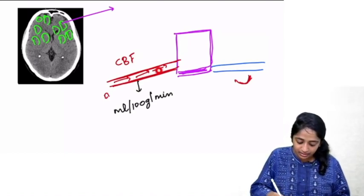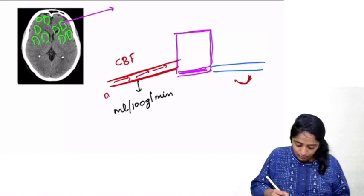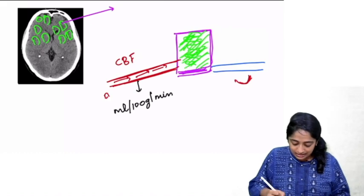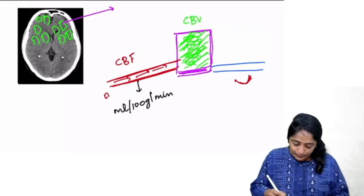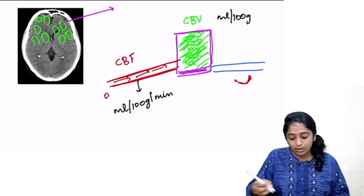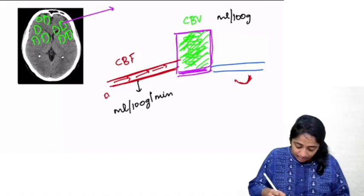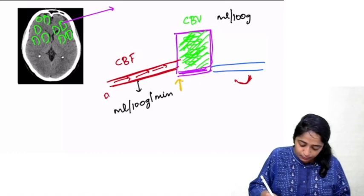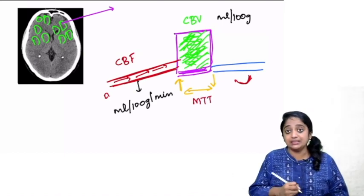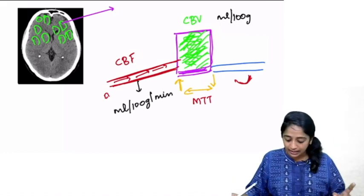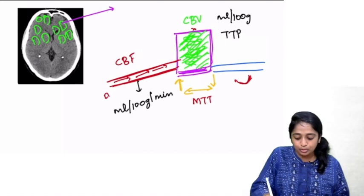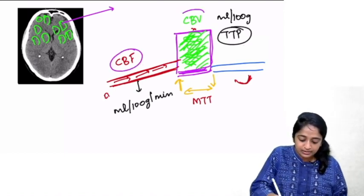After filling the voxel, blood must go out through the vein. The time duration between inflow and outflow is mean transit time (MTT). The time taken for blood to reach peak value is TTP — time to peak. For practical purposes, remember CBF, CBV, and MTT. These are the perfusion parameters we will use to differentiate infarct from penumbra.